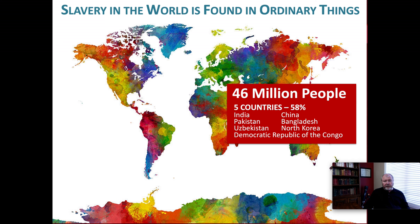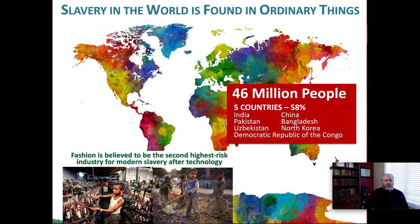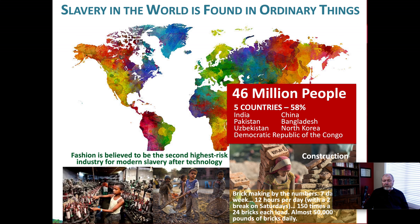Five nations dominate: India, China, Bangladesh, Pakistan, and North Korea. The fashion industry is believed to be the second highest risk industry for modern slavery. Brick making: seven days a week, 12 hours a day, with just a few brief breaks — 150 loads of 24 bricks each, almost 50,000 pounds, about 22,000 kilograms per day, carried on the backs of children, young women, and teenagers.